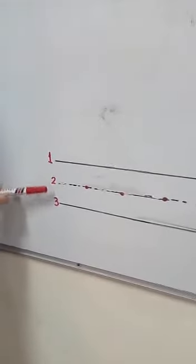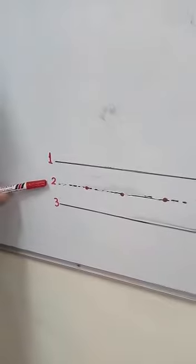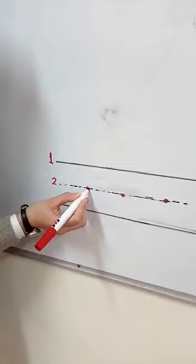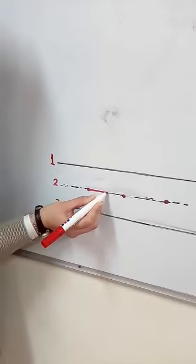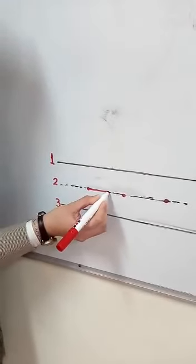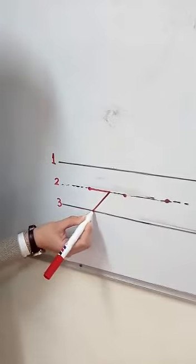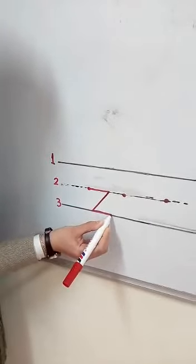Now let's see how we can write the letter Z. We have three lines. We will start from line number two. Put your pencil on the dot. Make a dash on the line, sloping down, and another dash on the line.